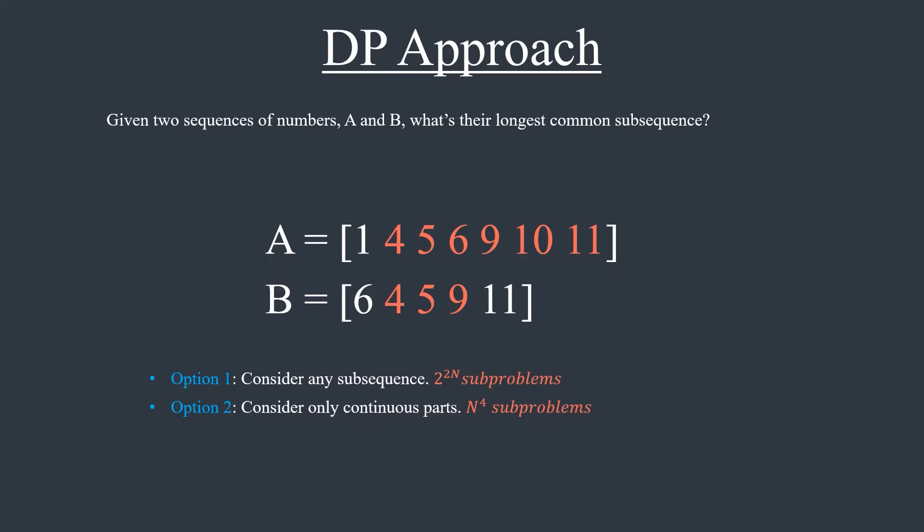We could also consider all prefixes or all suffixes. These are equivalent, so I'll just consider prefixes. There are n prefixes for each array, so the total number of sub-problems is n squared. It's not always clear where to start, but I like to start with the smallest number of sub-problems I can think of because the relationship between sub-problems tends to be simpler, if it exists.